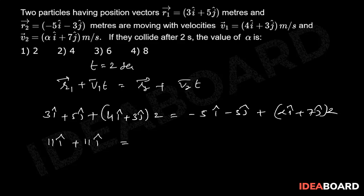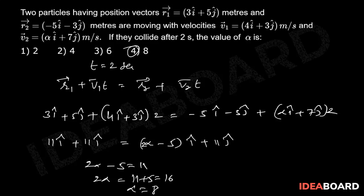Now equating the i components: 2 alpha minus 5 equal to 11, 2 alpha equal to 11 plus 5 is 16, therefore alpha equal to 8. So option 4 is the correct option.